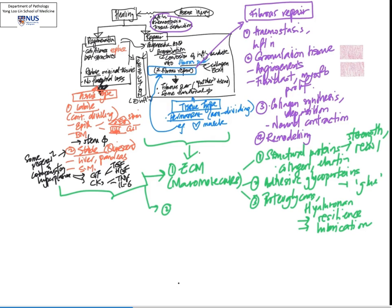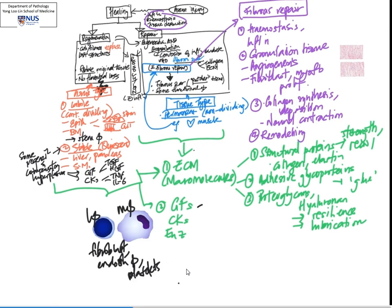The second factor, of course, would be a lot of molecules—growth factors, cytokines, as well as enzymes that are released by cells. All these are produced by cells which make the healing process possible. What we have here are the types of cells which are very important in healing and which release many of these factors, including macrophages, lymphocytes, fibroblasts, and endothelial cells.